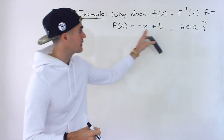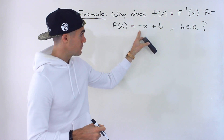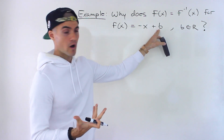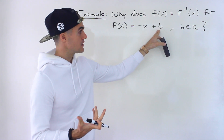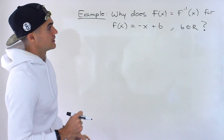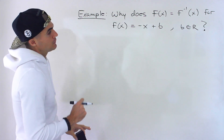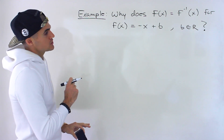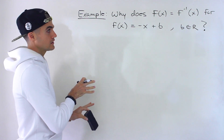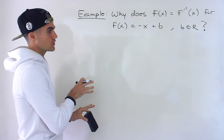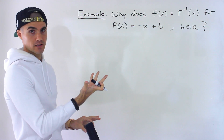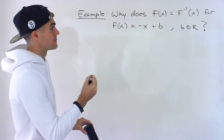So notice this is just a line with a slope of negative one, and then the b value is going to be the y-intercept, and that b value can be anything. I'm going to explain this question in two different ways — first algebraically why it works, and then graphically why it works as well.